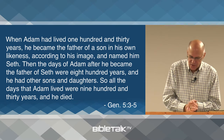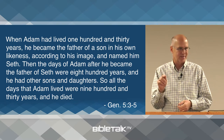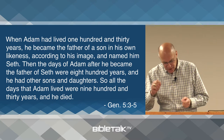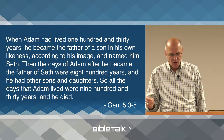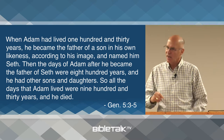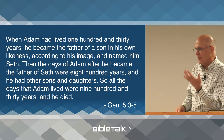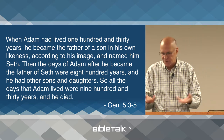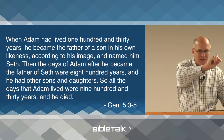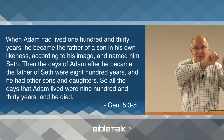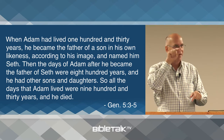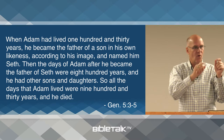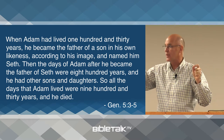Having Seth at 130 years doesn't mean they didn't have any other children before this. It simply means that the one through whom the promise would come was born when Adam was 130 years of age. A lot of people read this and say, so far all I'm counting is Cain, Abel, and Seth — three kids. How did they populate the world with three kids? No — the Bible is just following that thread, just the thread of the seed of promise. Lots of other kids, lots of things going on. It's just hitting the high points.